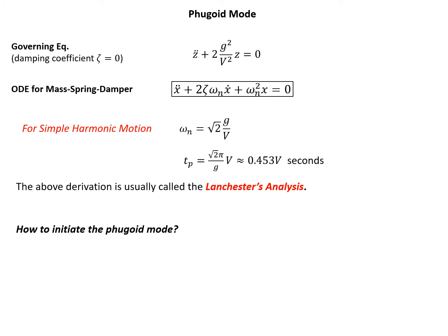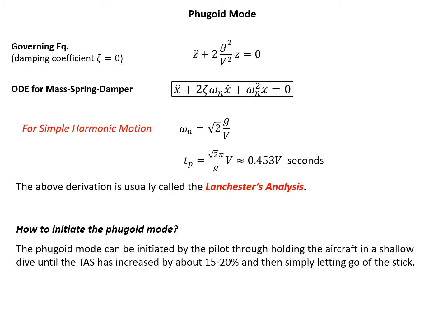You may wonder how to initiate the phugoid mode. It can be initiated by the pilot by holding the aircraft in a shallow dive until the true airspeed has increased by about 15 to 20 percent, then simply releasing. The aircraft will climb, then dive again, and after a few periods it will return to its original state — that is the phugoid mode.